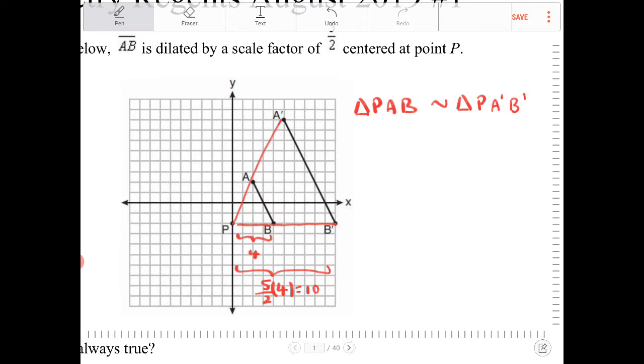The same proportion can be set up with PA and PA'. So PA' over PA, those two sides, if I compare those proportions, they are going to be proportional to PB' to PB, which is all going to be a scale factor of 5 halves.